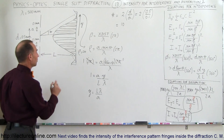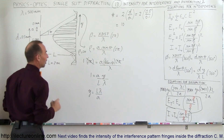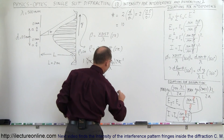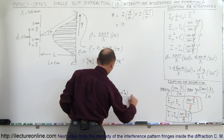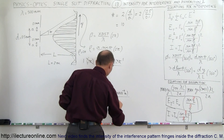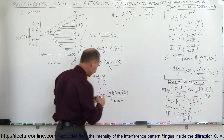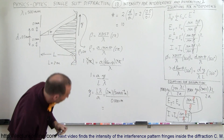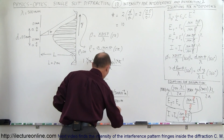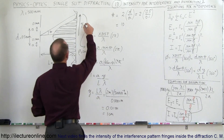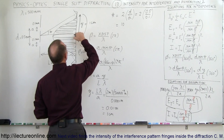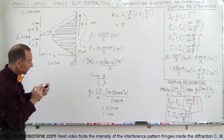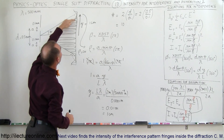Let's plug in numbers, assuming L equals 2 meters. The wavelength we're using is 500 nanometers, which is 500 times 10 to the minus 9 meters, and we divide by the slit width of 0.0001 meters. Working that out, we get y equals 0.01 meter, which is equal to 1 centimeter. So 1 centimeter is the distance from the central maximum to the first minimum in our diffraction pattern.